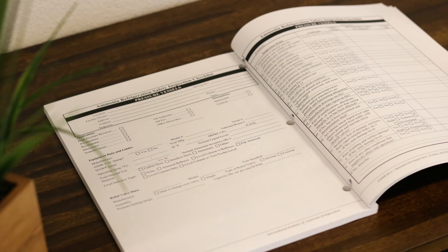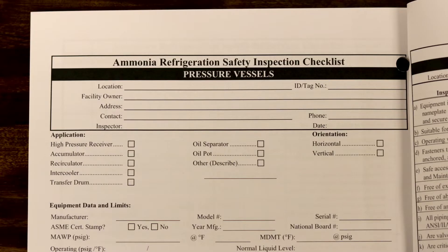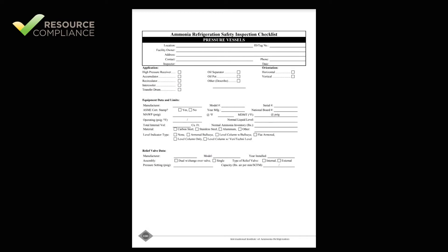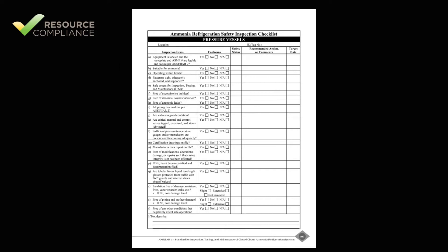The checklists are typically two pages. The first page contains contact and equipment information, and the second page has the inspection checklist. While all the information on the second page will change year to year with the equipment inspection, much of the information on the first page should stay the same. For this reason, you may only have to fill out the first page of each piece of equipment once. For subsequent years, you should only have to fill out the second page.